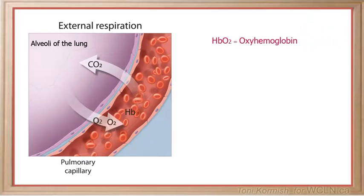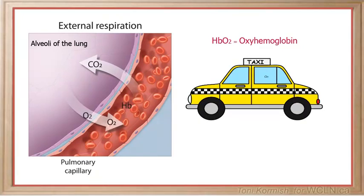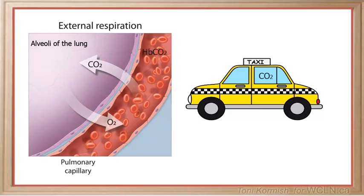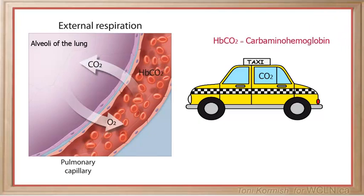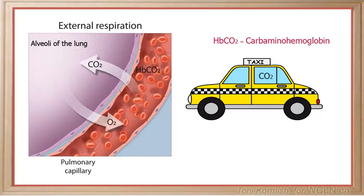Think of the hemoglobin molecule as the taxi that picks up various passengers in the bloodstream and delivers them to where they are needed. Another passenger carried by hemoglobin is carbon dioxide. When hemoglobin binds to carbon dioxide, a compound called carbaminohemoglobin is formed. Carbaminohemoglobin is delivered to the lungs where the carbon dioxide is released from the hemoglobin molecule and diffuses out of the bloodstream into the alveoli so that it can be exhaled.